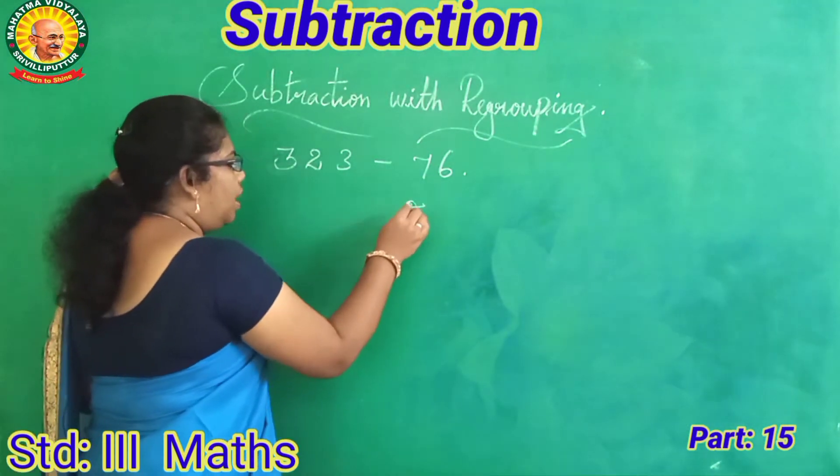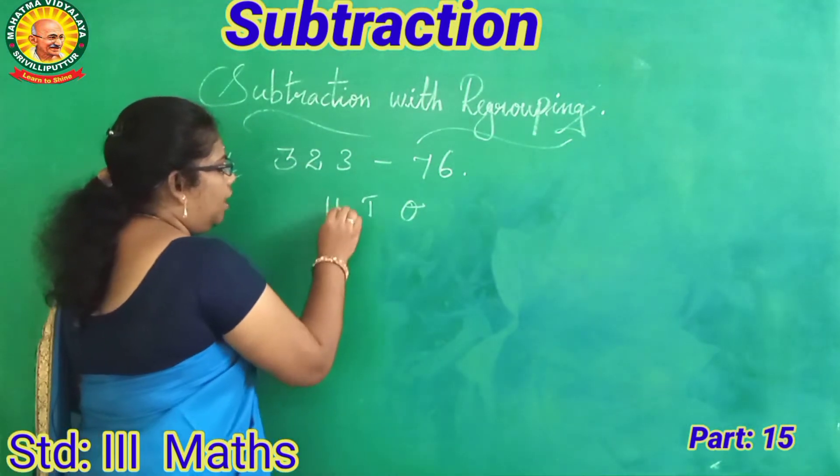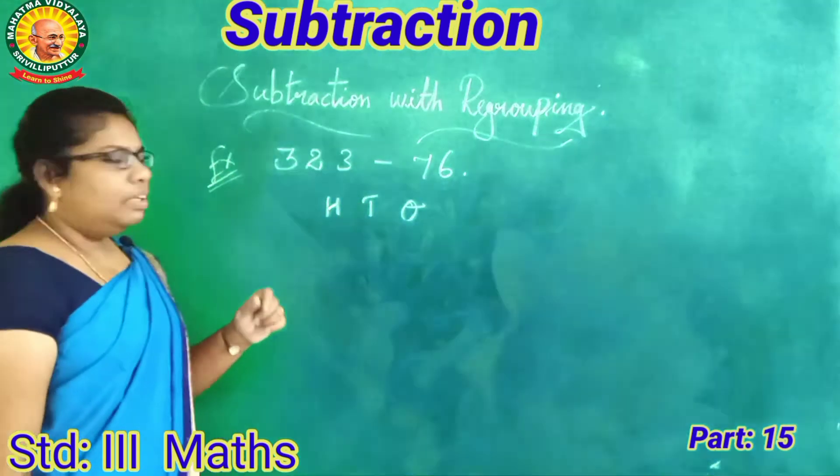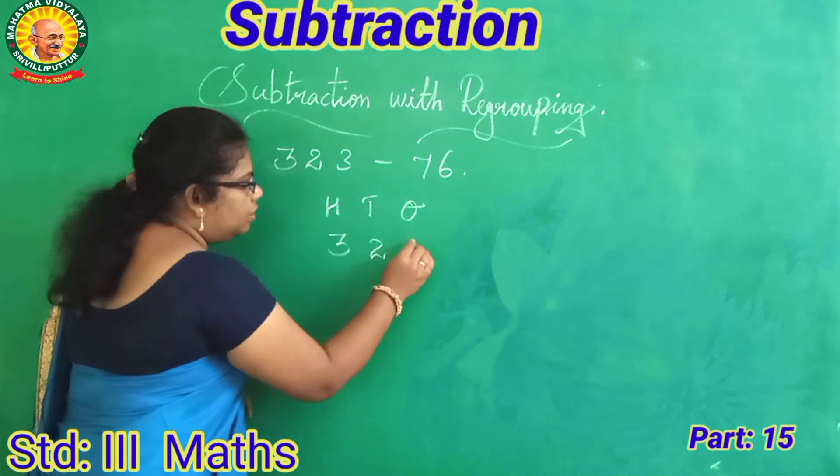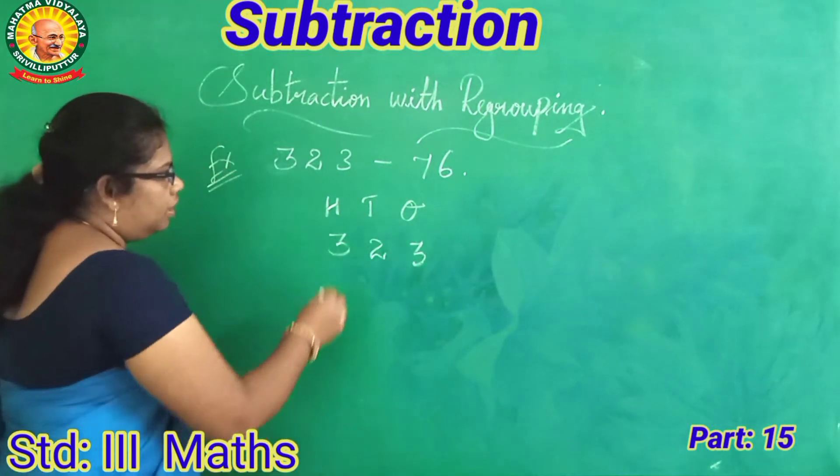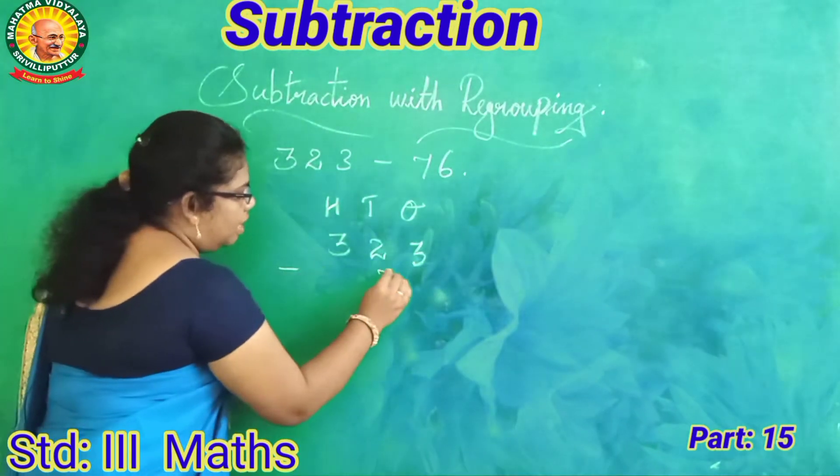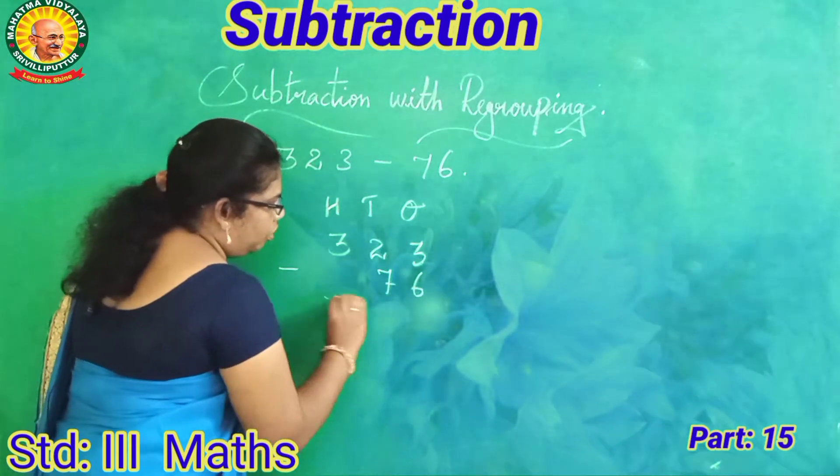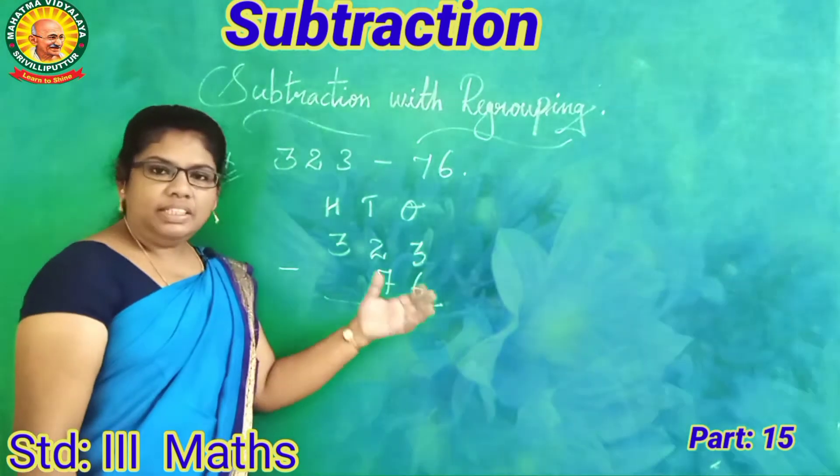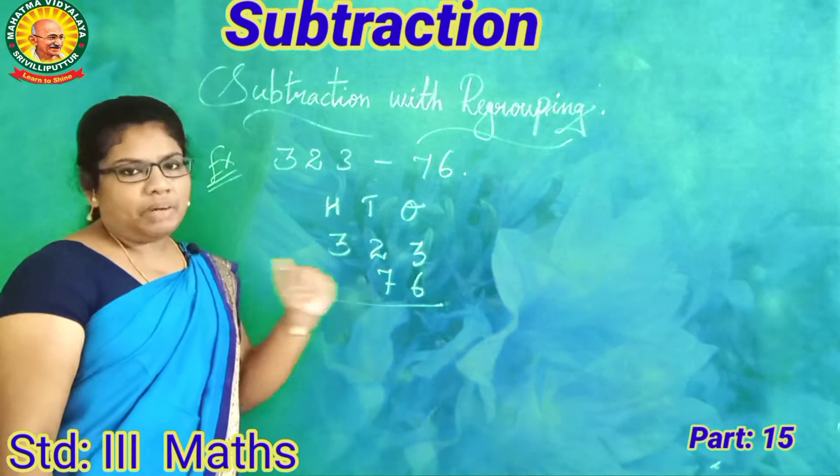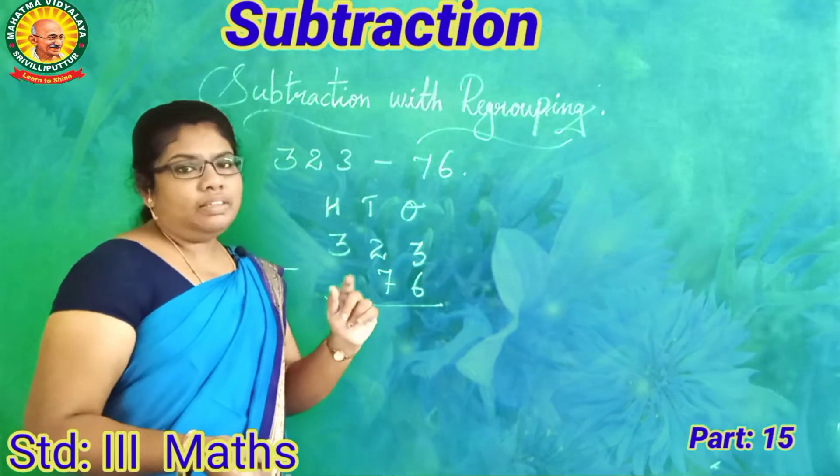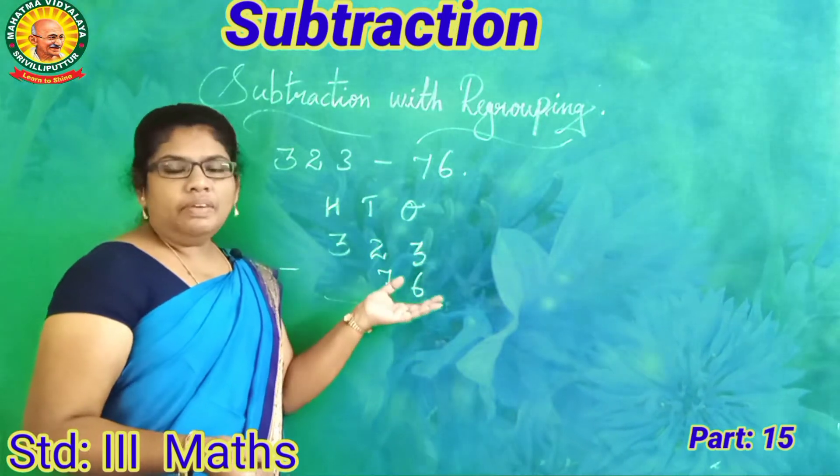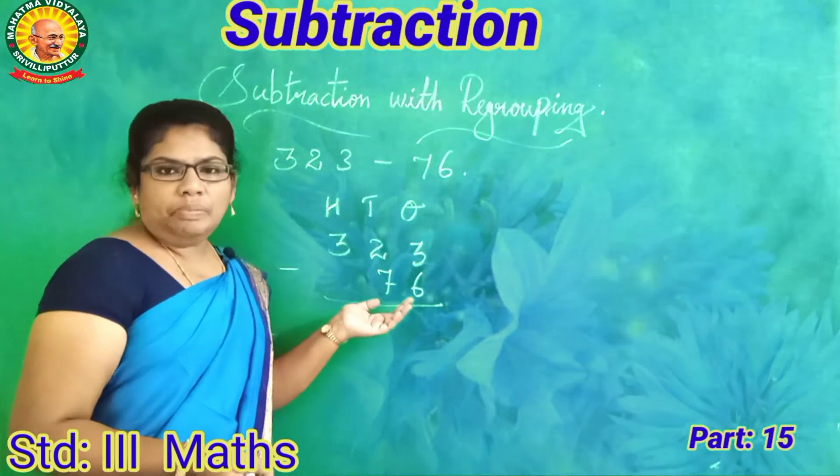So write the place value at first: ones, tens, and hundreds. The minuend is 323 minus 76. What do you do? Subtract. So you have to write the bigger value at first, top value at first, and smaller value at bottom.